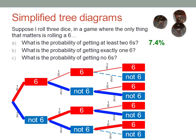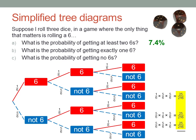There are three ways of getting exactly one six, and they each have the same likelihood, twenty-five out of two hundred and sixteen. So the theoretical probability of rolling exactly one six is three times this fraction, seventy-five out of two hundred and sixteen, or twenty-five out of seventy-two, about thirty-four point seven percent.